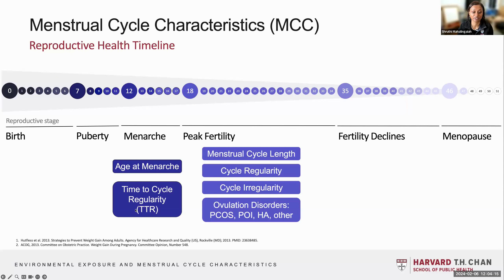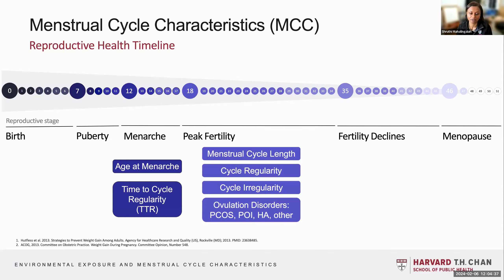Other outcomes include menstrual cycle length, regularity, irregularity, and then some ovulation disorders such as polycystic ovary syndrome, premature ovarian insufficiency, and functional hypothalamic amenorrhea. There are others, but not every disorder is the same, even if they manifest with cycle irregularity.